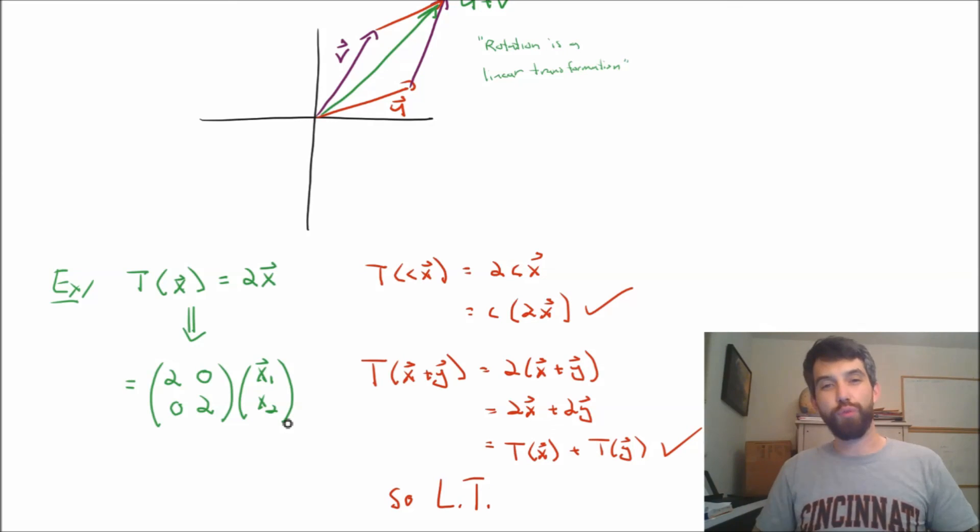If it was, say, three dimensions, you'd have to think what would be the analogous matrix. But in two dimensions, this is going to be the same transformation.